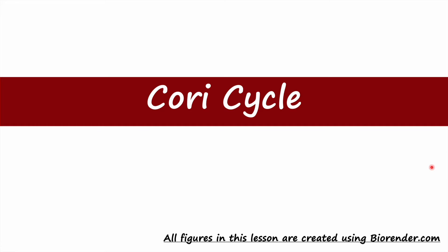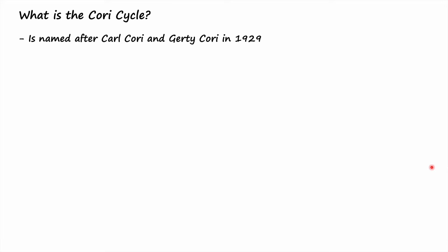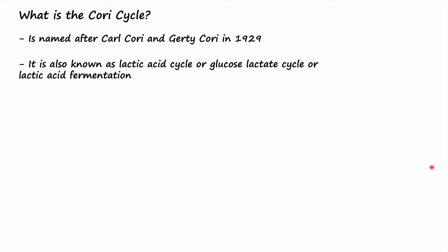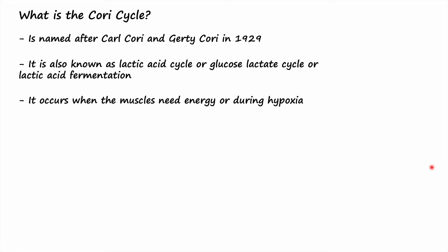In this lesson we are going to talk about the Cori cycle. It is named after husband and wife Carl Cori and Gerty Cori in 1929. It is also known as the lactic acid cycle, glucose-lactate cycle, or lactic acid fermentation. The bacteria which makes yogurt carry out the same lactic acid fermentation process.